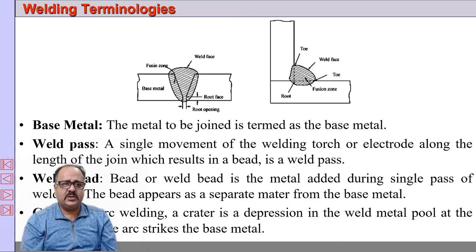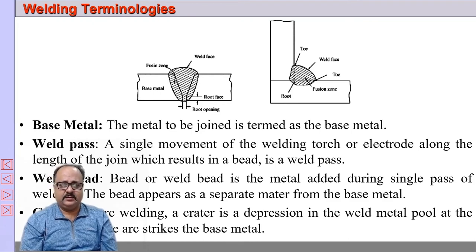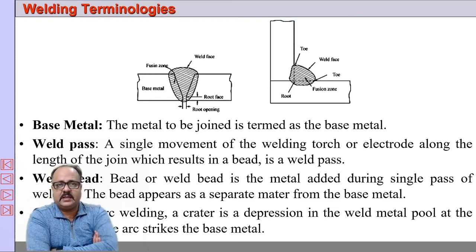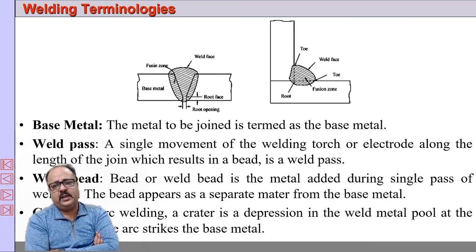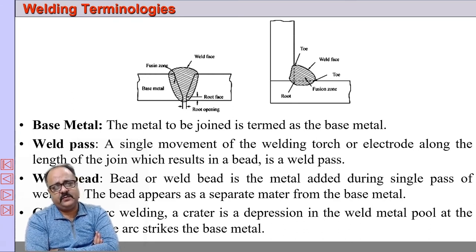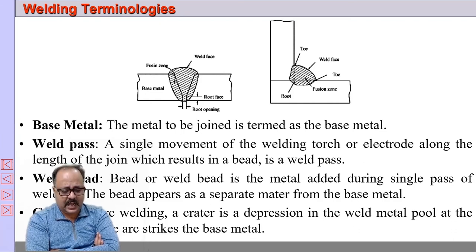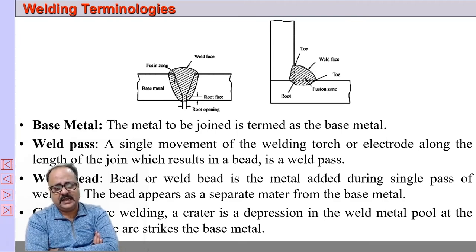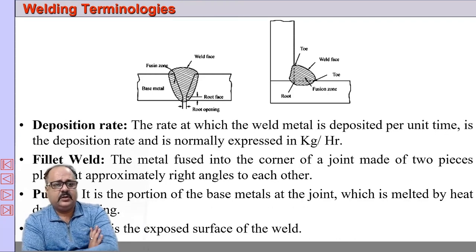Here we discuss the various terminologies used in subsequent lectures, particularly in arc welding. Base metal is the two metal pieces being joined — most of the time of the same material. Weld pass is a single movement of the welding torch or electrode along the length of the joint, which results in a bead. Weld bead is the additional material added during a single pass. It appears as a separate deposit from the base metal. A crater is the depression in the molten metal created directly ahead by the arc pressure or arc force during arc welding.